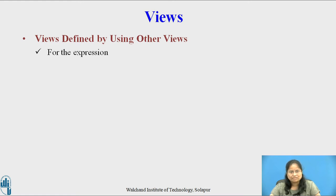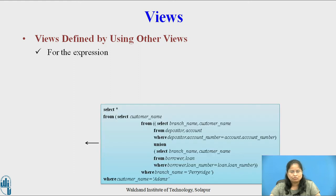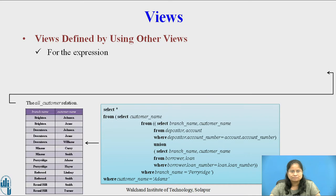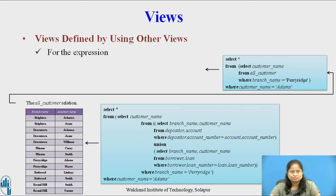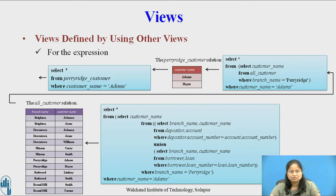For the expression on the previous slide, the flow was: view all_customer produces the resulting relation all_customer, then all customers of the Perirage branch are obtained using view all_customer, producing the perirage_customer relation. Then the expression SELECT * FROM perirage_customer WHERE customer_name = 'Adams' yields the final resulting relation that contains the customer name Adams.